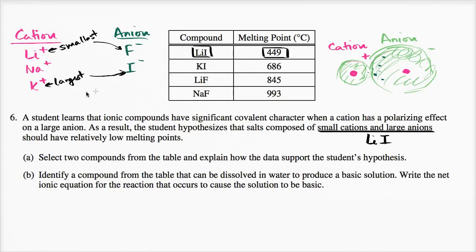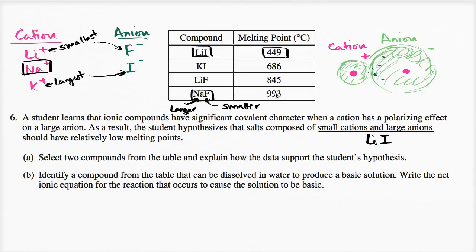Now let's take the other extreme — what happens if we take a large cation and a small anion? They don't have that exact combination here, but sodium fluoride is interesting because we have a larger cation and a smaller anion. And notice that has the highest melting point. So these are two that are good to compare.